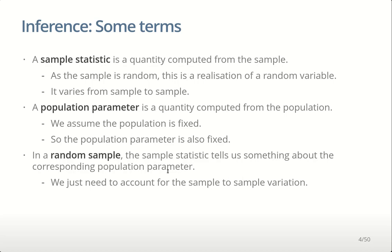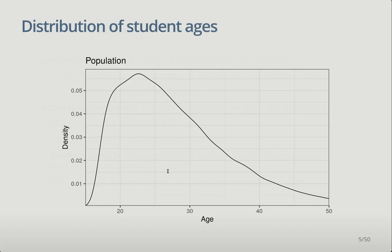Here's kind of how it works. We have the distribution of ages of students at Massey University, and we see that it's skewed to the right — most people were in their early twenties, but there are some people that are significantly older.